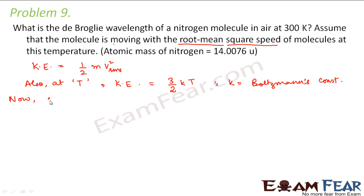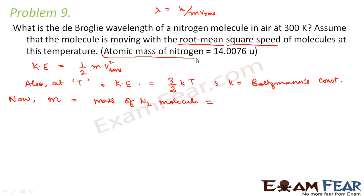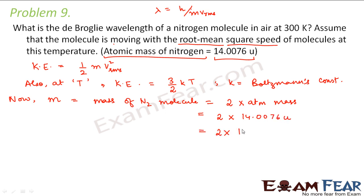Now let us calculate the mass of the nitrogen molecule, because to calculate the de Broglie wavelength we need mass as well as v_rms. The atomic mass of nitrogen is given. One molecule of nitrogen consists of two atoms, so the mass of one nitrogen molecule is equal to 2 times the atomic mass — that is 2 into 14.0076 atomic mass units. One atomic mass unit is the mass of one proton, which is 1.67 × 10⁻²⁷ kg. So this is the mass of one nitrogen molecule.